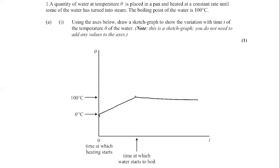When you're asked to solve this question, you'll have to plot a graph. Your line would start from theta, because that's the point when heating starts, and the temperature increases until it reaches 100 degrees. At that point the water starts to boil, so the temperature should remain constant.